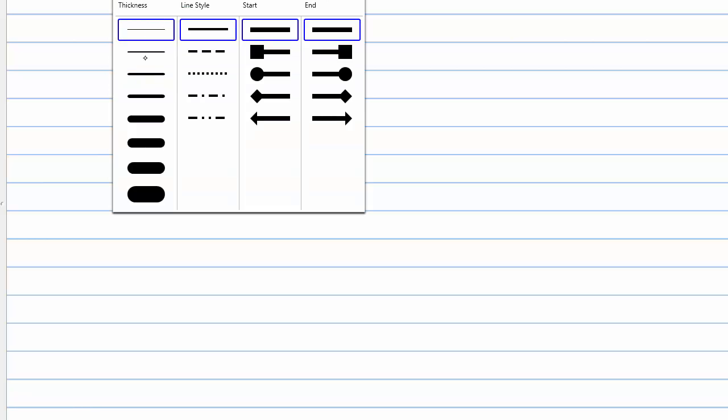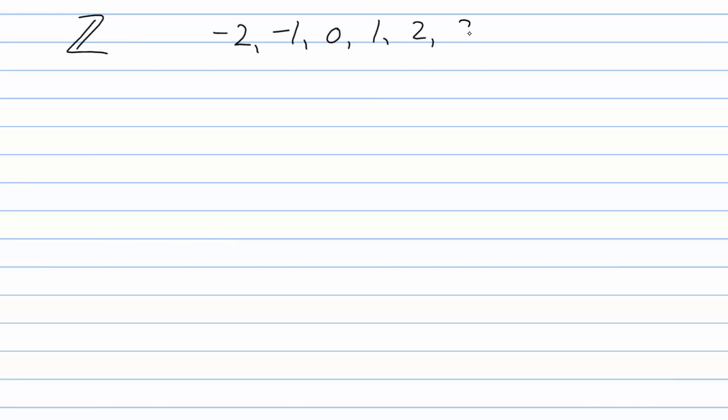In a previous slide, we saw that the integers form a group under addition. Remember that the integers are the whole numbers: things like negative 2, negative 1, 0, 1, 2, 3, etc. — all negative whole numbers, 0, and the positive whole numbers. So the set of integers was a group under addition.